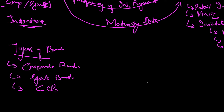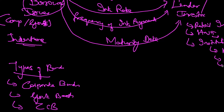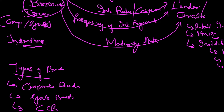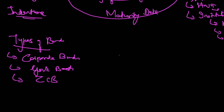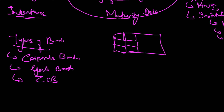In a zero coupon bond, there is no coupon paid. Coupon means interest rate — coupon rate and interest rate are the same. Why do we call it a coupon rate? Before the electronic age, bonds used to be physical certificates. On the back side of the certificate, there were coupons attached. When the due date came to pay interest, you had to tear off that coupon and go to the company to collect the interest payment. That's why it came to be called a coupon, and the name has persisted to this day.